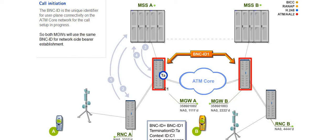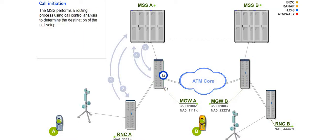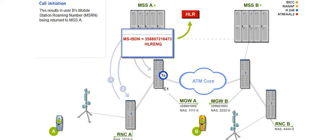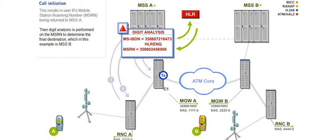The BNC ID is the unique identifier for user plane connectivity on the ATM core network for the call setup in progress, so both MGWs will use the same BNC ID for network side bearer establishment. The MSS performs a routing process using call control analysis to determine the destination of the call setup. In this example, the destination is the home location register inquiry. This results in user B's mobile station roaming number, or MSRN, being returned to MSSA. Then digit analysis is performed on the MSRN to determine the final destination, which in this example is MSSB.